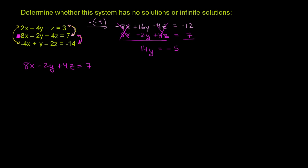And this bottom equation, I'm going to multiply times positive 2. Negative 4x times positive 2 is negative 8x. 2 times y is plus 2y. 2 times negative 2z is negative 4z. And then 2 times negative 14 is negative 28.